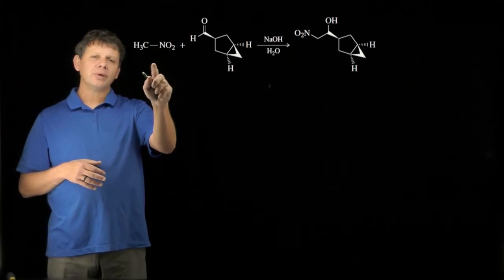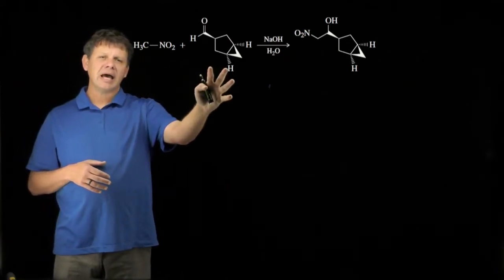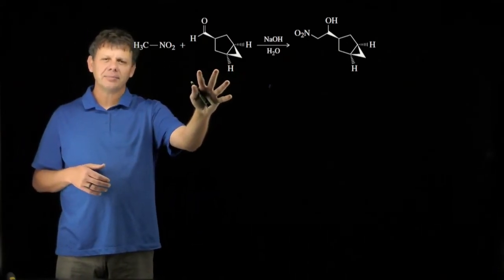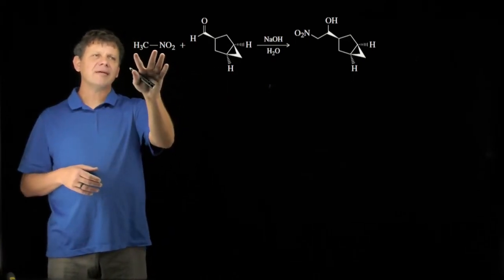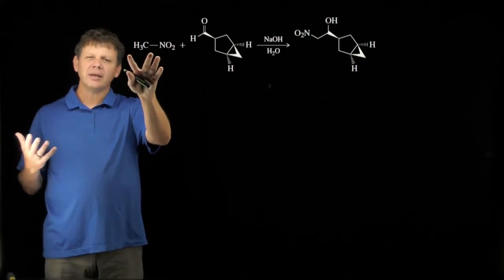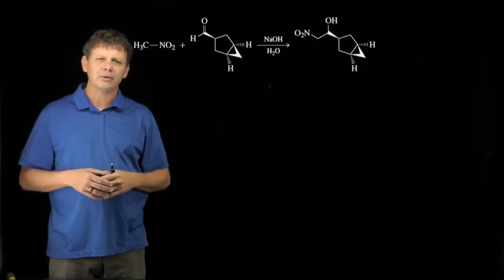Now if we look at what we have here, we have nitromethane and an aldehyde. We recognize aldehydes as being part of the aldol reaction, usually electrophiles for enolates, but we haven't ever seen a nitromethane or a nitro group being used in this reaction.